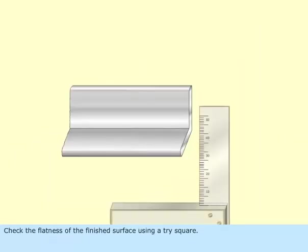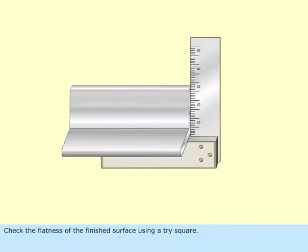Check the flatness of the finished surface using a tri-square. This filed side is further used as the reference datum side for future markings.